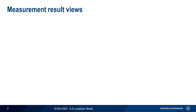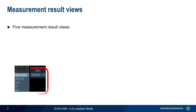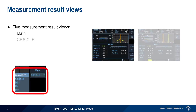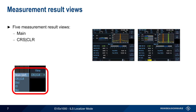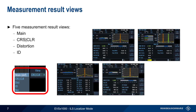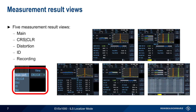On the EVS, ILS localizer measurements are divided into five different views: Main, Course and Clearance, Distortion, ID, and Recording. We'll start by looking at the Main Analysis view.